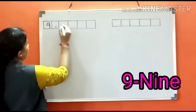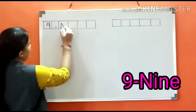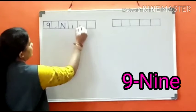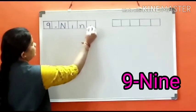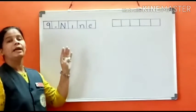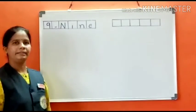9. N must be capital, N-I-N-E, 9. What is the spelling of 9 children? N-I-N-E.